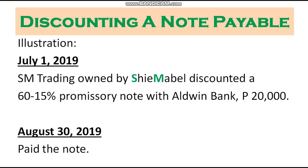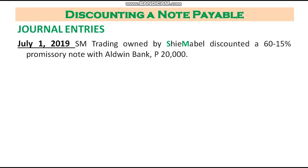When the note is paid at maturity, there is no more interest to be paid — simply the face of the note. We have two examples: the first is discounting a note payable, and the second is discounting a note receivable. For the first example, on July 1, 2019, SM Trading, owned by Shima Bell, discounted a 60-day, 15% promissory note with Alduin Bank in the amount of 20,000 pesos. On August 30, 2019, the note was paid.